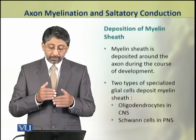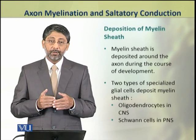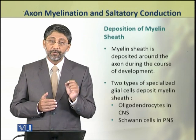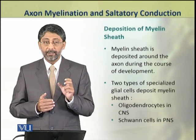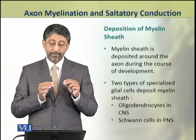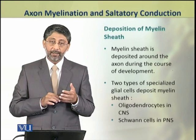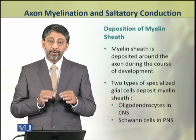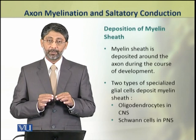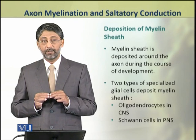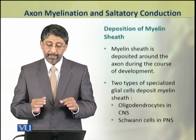The myelin sheath is deposited around the axon during the course of development. Two types of specialized glial cells produce this myelin sheath. In the central nervous system, oligodendrocytes deposit myelin sheath, while in the peripheral nervous system, Schwann cells secrete myelin sheath around the axons.